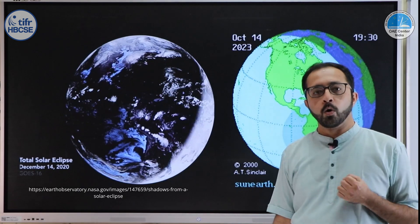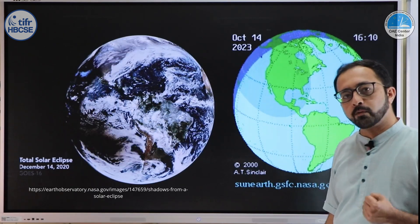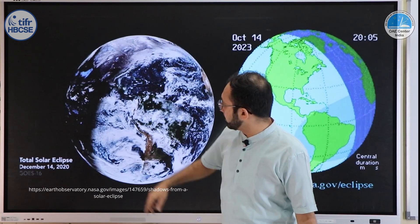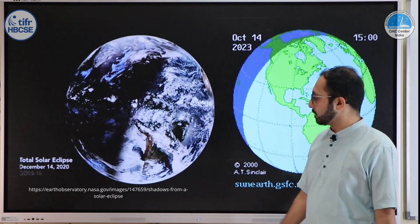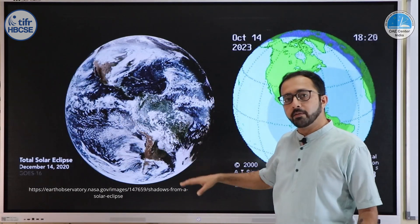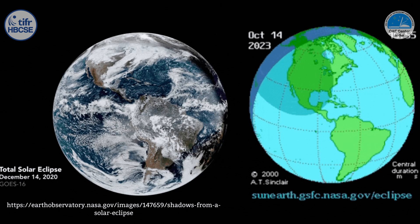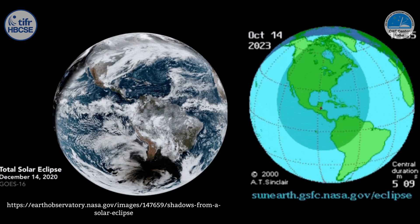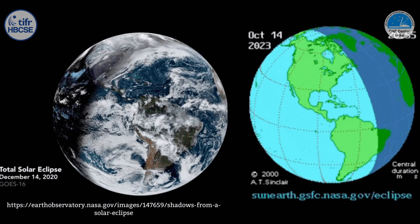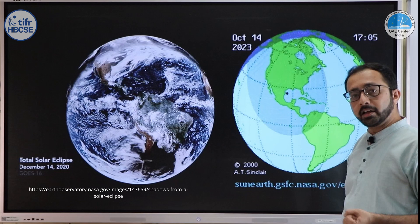What if you are in a space station? How will you see the eclipse? The shadow of the moon falls on the earth. You can see a shadow of the moon passing through a region of earth — people in that part will see a solar eclipse. In the animation, the dark spot which is the umbra moves across earth showing where people will see the total eclipse; the much larger fainter region around it is the penumbra.